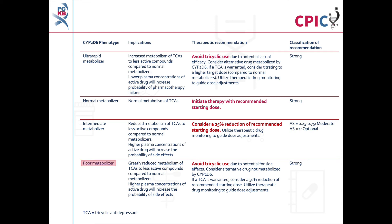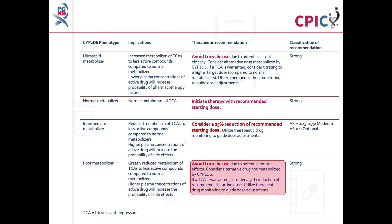Patients with a CYP2D6 poor metabolizer phenotype will have greatly reduced metabolism of TCAs to less active compounds. Use of TCAs should be avoided in these patients. If use of a TCA is warranted, a 50% reduction in the recommended starting dose should be considered. This is a strong recommendation.